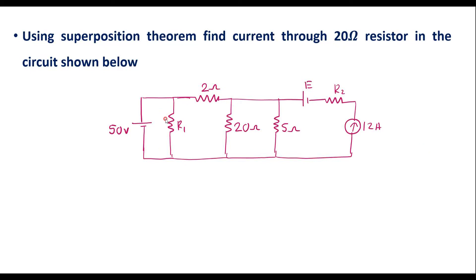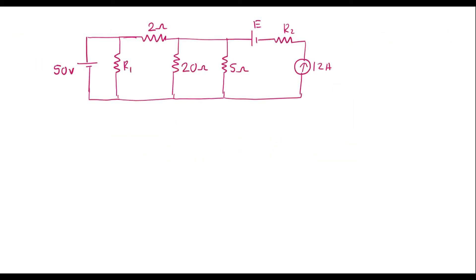In this video, let me consider one numerical on superposition theorem. Using superposition theorem, find the current through the 20 ohm resistor in the circuit shown below. This is the given circuit; we are supposed to find the current I which flows through the 20 ohm resistor using superposition theorem.